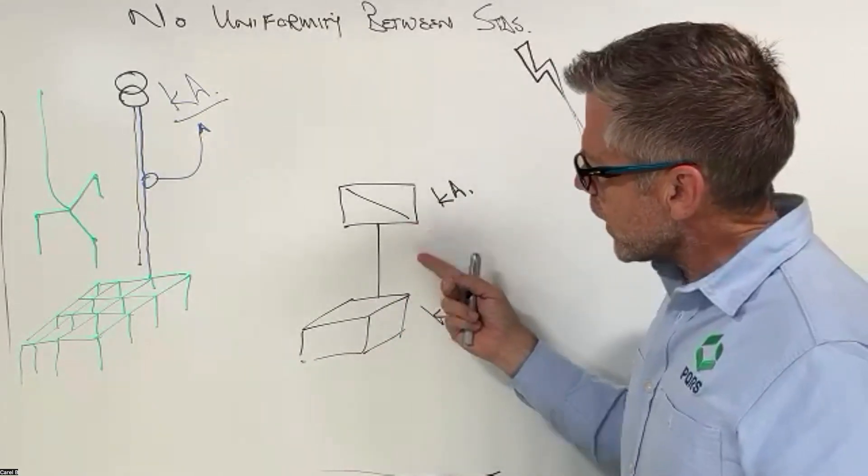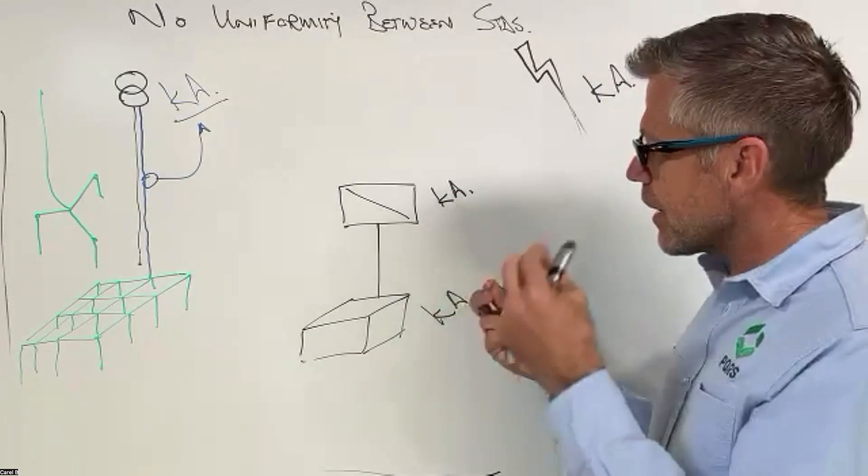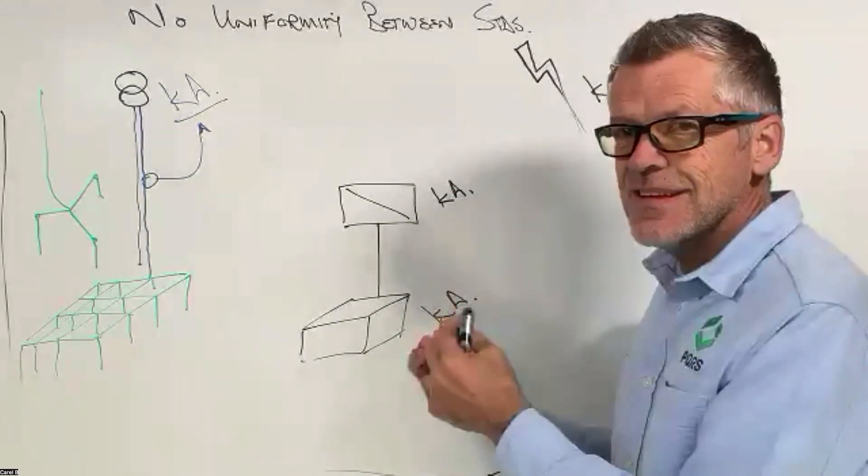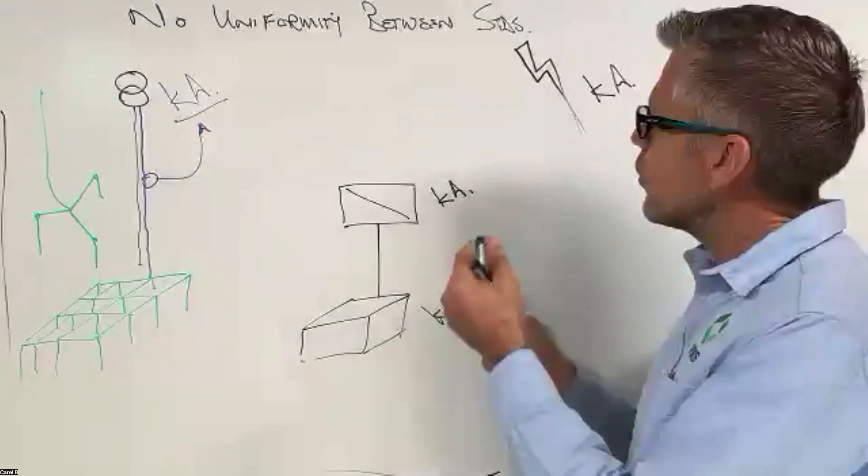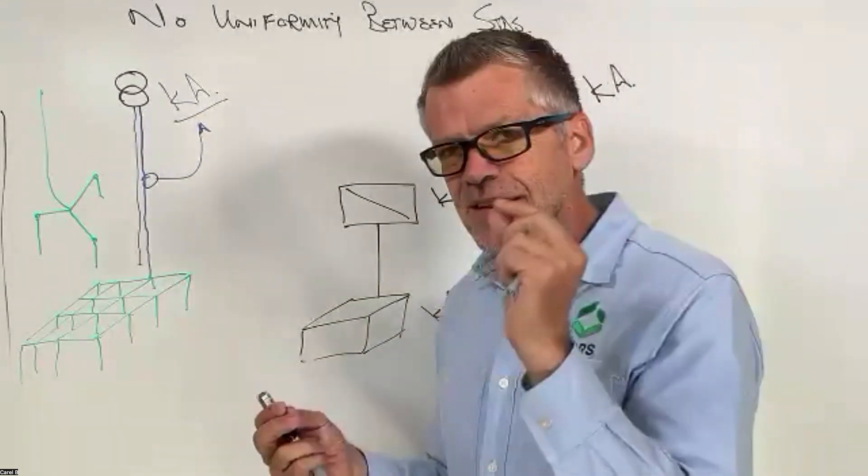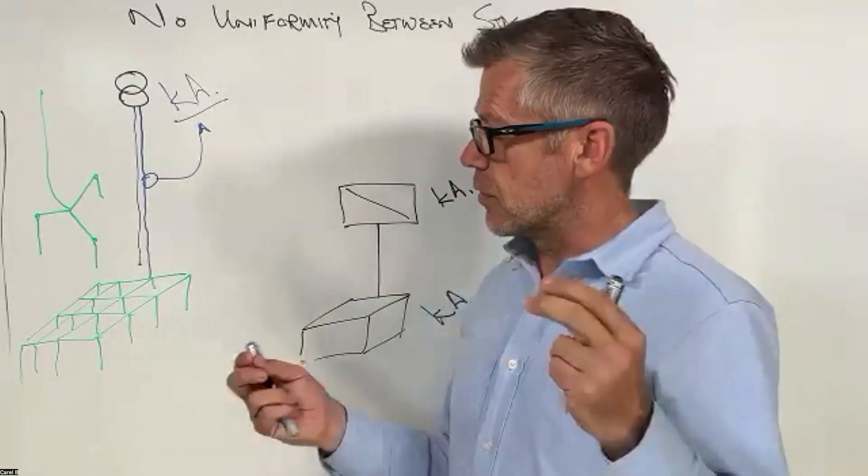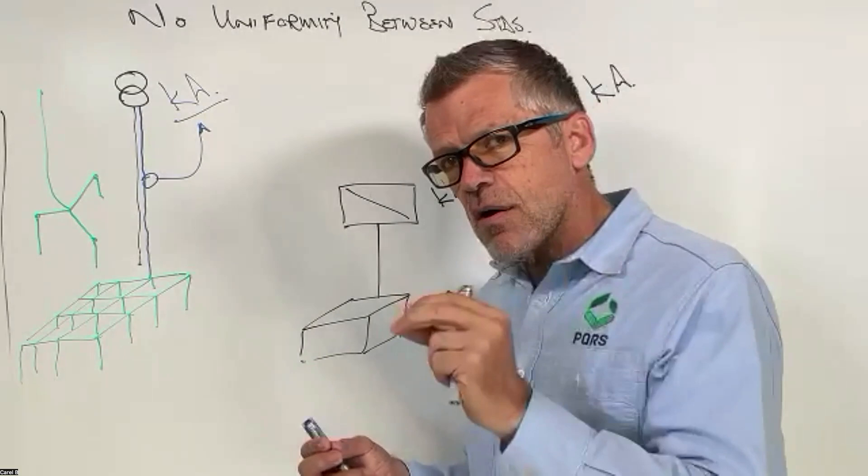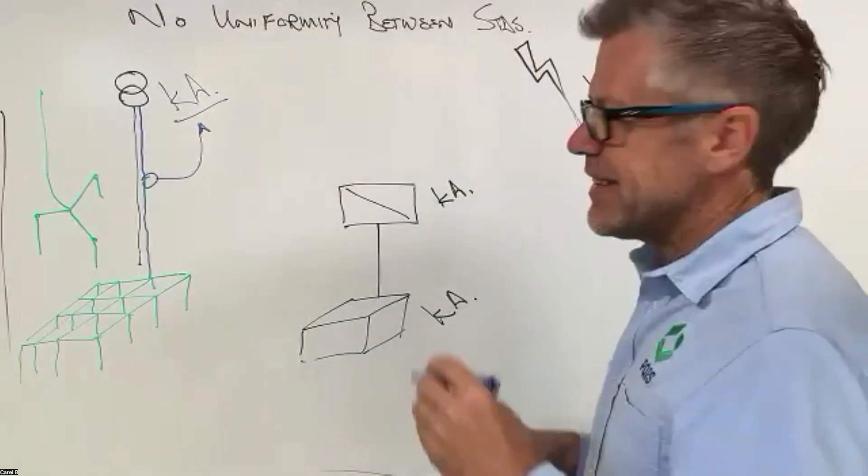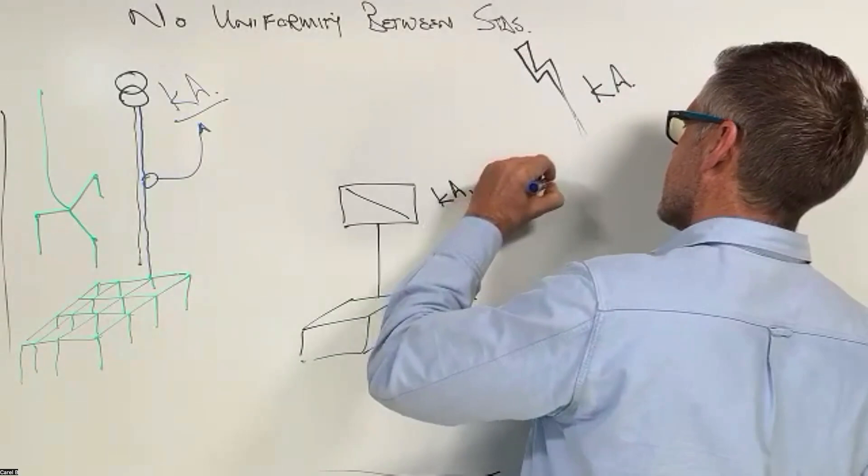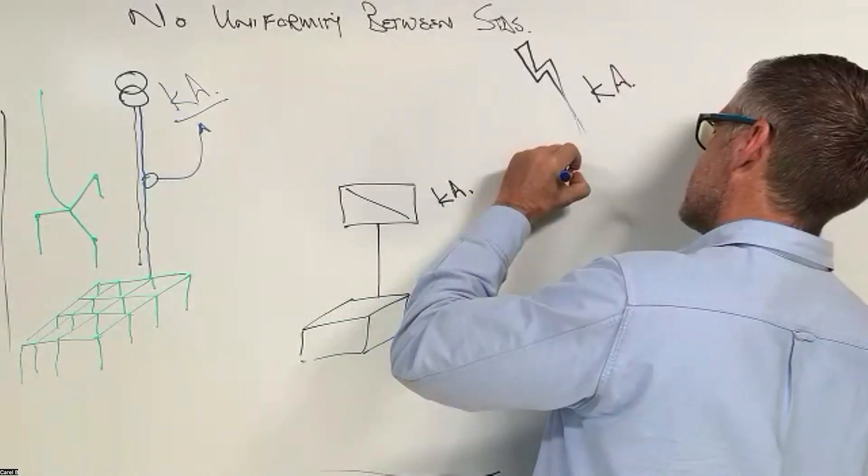So when we earth with a 16 millimeter cable, what are we protecting against? Are we expecting a direct lightning strike? So if we are expecting a direct lightning strike according to, yes I think it's SANS 62305-3.